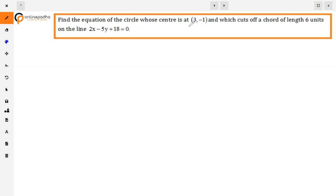We have to find the circle equation where the center is given as (3, -1) and which cuts off a chord of length 6 units on this line. This line has a chord which cuts off the length of 6 units on the line. So we find the equation of this circle.